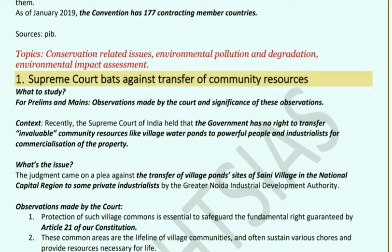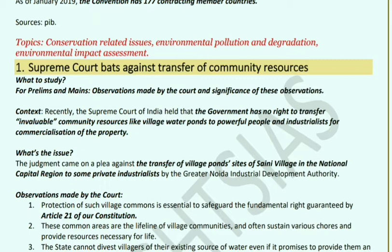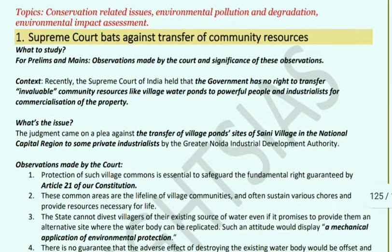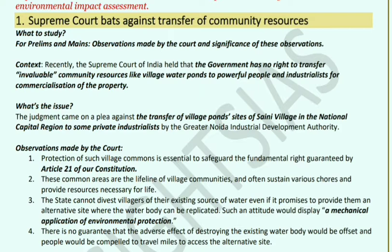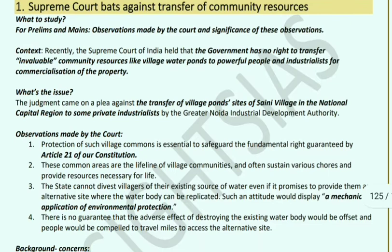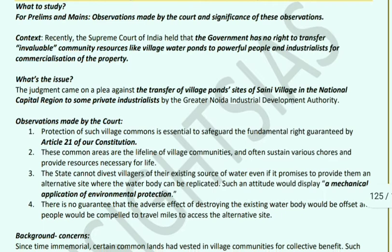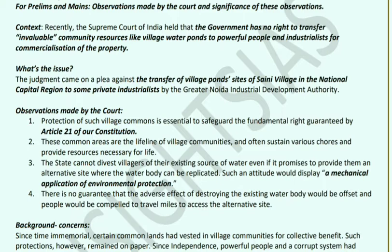Supreme Court bats against transfer of community resources: The Supreme Court said the government has no right to hand over invaluable community resources — such as village water ponds — to powerful people or industrialists for commercialization. The issue arose when village ponds in Saini village in the National Capital Region were transferred to private industrialists by the Greater Noida Industrial Development Authority. The court cited protection under Article 21, which relates to the right to life and personal liberty.